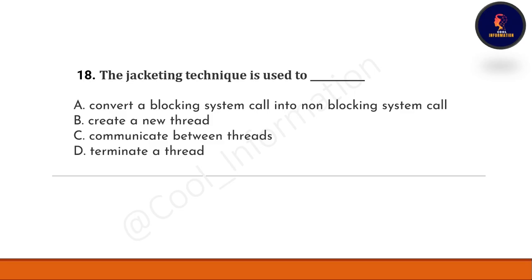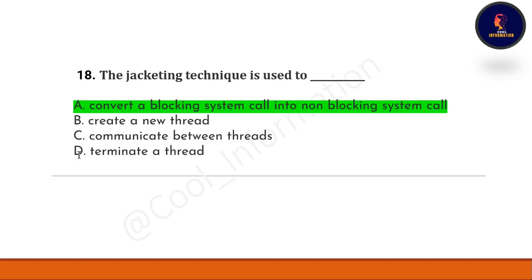Question 18: the jacketing technique is used to — Option A: convert a blocking system call into a non-blocking system call. Option B: communicate between threads. Option C: terminate a thread. The correct option is A — convert a blocking system call into a non-blocking system call.